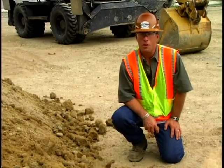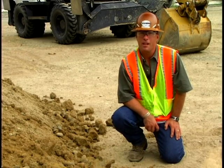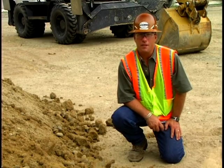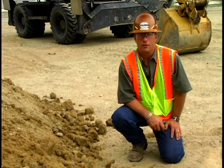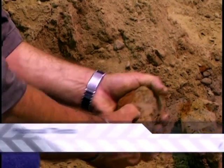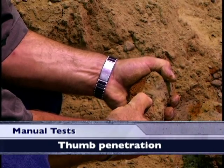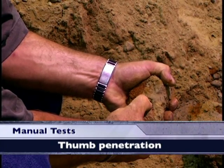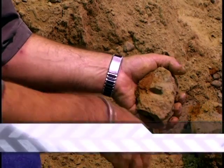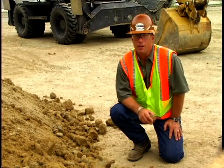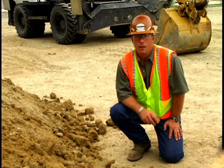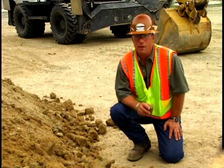Manual tests must also be performed on soil before excavation begins, and there are a number of methods that can be used. Some methods test the cohesion of the soil — how well it sticks together — and other methods test the strength of the soil. The thumb penetration test is probably the easiest soil test. All you do is press your thumb firmly into the soil. If your thumb doesn't go any further than the length of your thumbnail, it's most likely a type B soil. If your thumb penetrates the full length of your thumb, then it's probably type C soil or very granular.